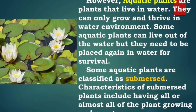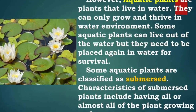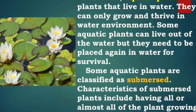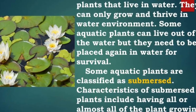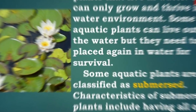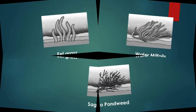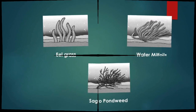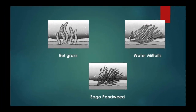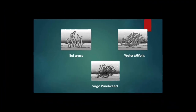Some aquatic plants are classified as submerged. Characteristics of submerged plants include having all or almost all of the plant growing underwater. Examples include eelgrass, watermilfoils, and sago pondweed.